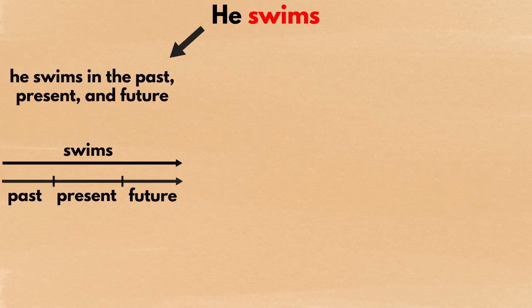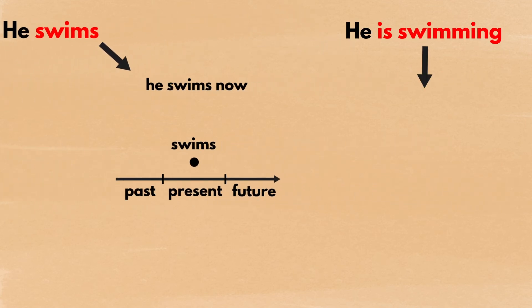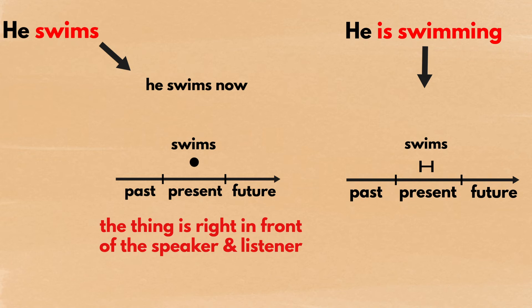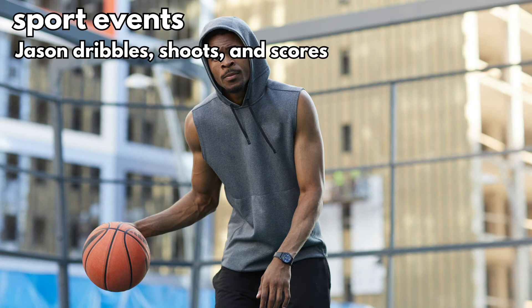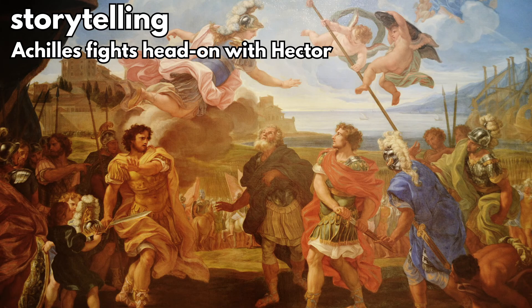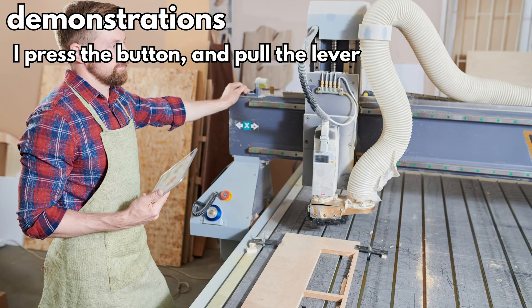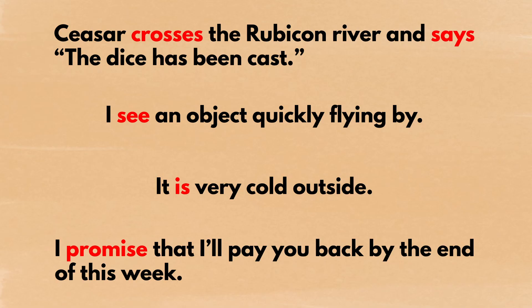Take the sentence 'He swims' — it can either mean he swims in the past, present, and future, or that he is swimming right now. On the other hand, 'he is swimming' has only one interpretation. For this reason, native speakers use the simple present when the thing is right in front of them and there is no chance of misunderstanding. These situations include sport events, as in 'Jason dribbles, shoots, and scores'; storytelling, as in 'Achilles fights head-on with Hector'; and demonstrations, as in 'I press the button and pull the lever.' For all other cases, native speakers prefer the present continuous tense.